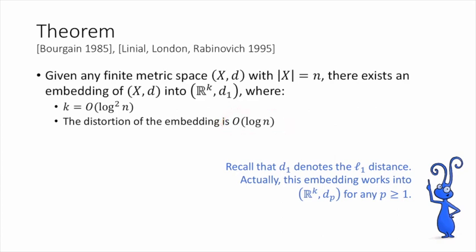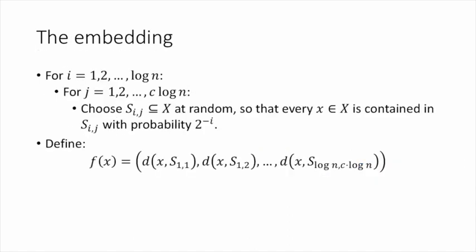Here recall that d_1 refers to the L_1 distance. In fact, this embedding actually works into L_p spaces for any p greater than or equal to 1, not just for L_1. We might see this in class and/or on homework. As a side note, it's actually possible to improve the target dimension k to big O of log n, but it's not possible to improve the distortion. There are some metrics that require big omega of log n distortion, no matter what the target dimension.